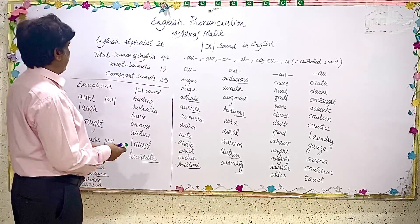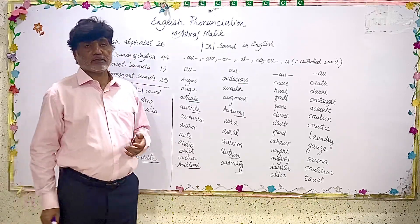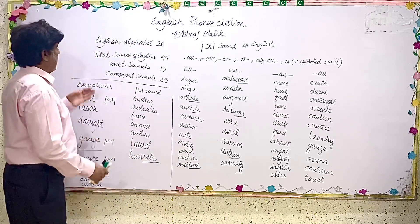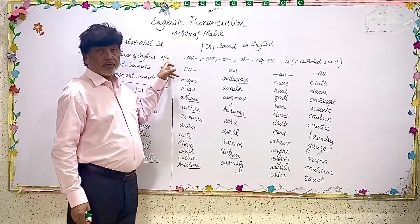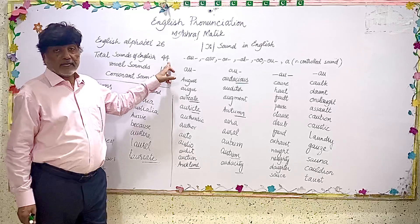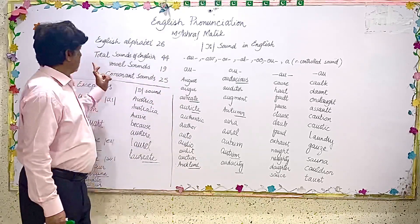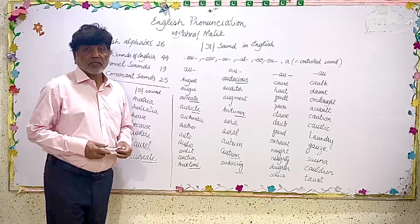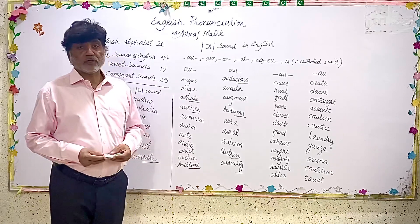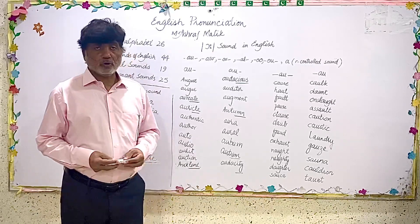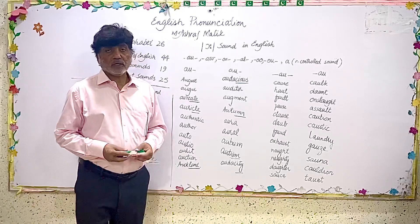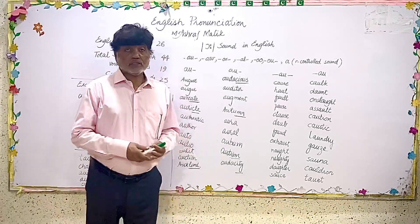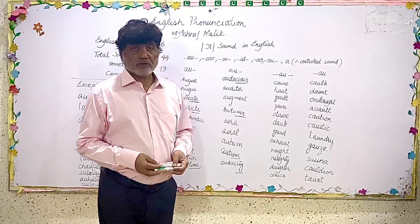In English there are 26 letters or alphabet, and these 26 alphabet can give us 44 sounds. The total sounds of English are 44, which means that one letter can give us more than one sound. Among them we have 19 vowel sounds and 25 consonant sounds. We already know that among these 26 English alphabet, five letters are called vowels and the remaining 21 are classified into the category of consonants.